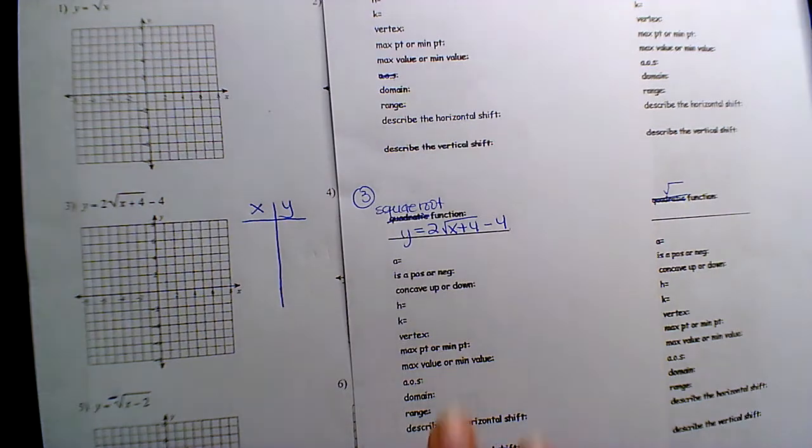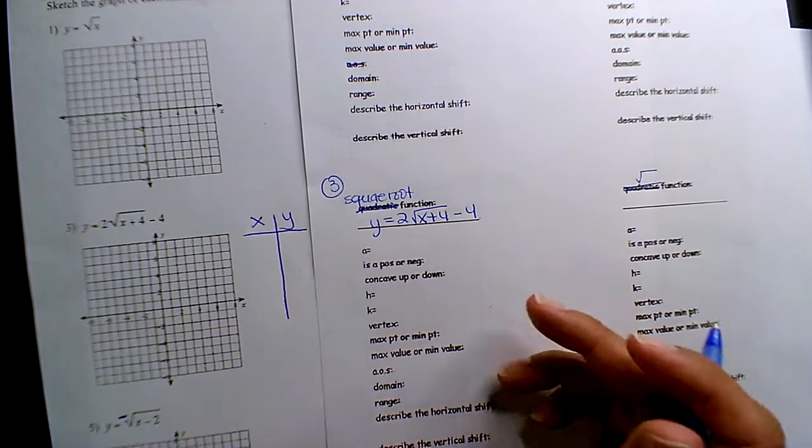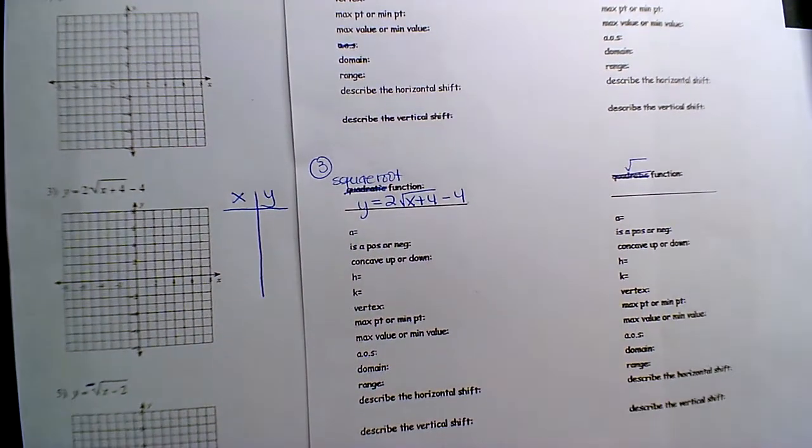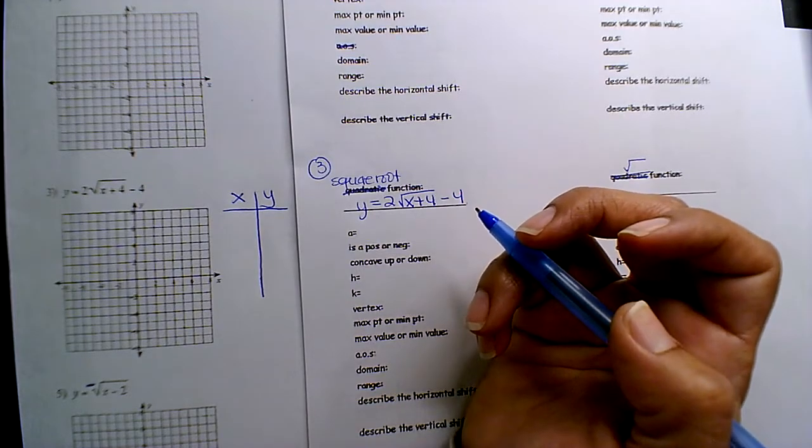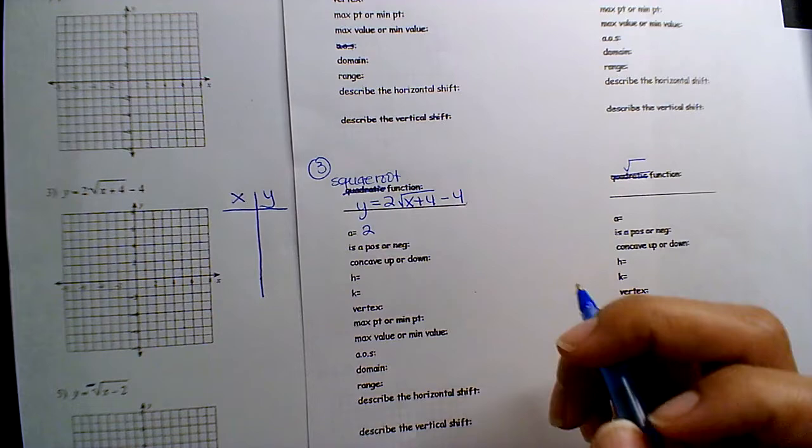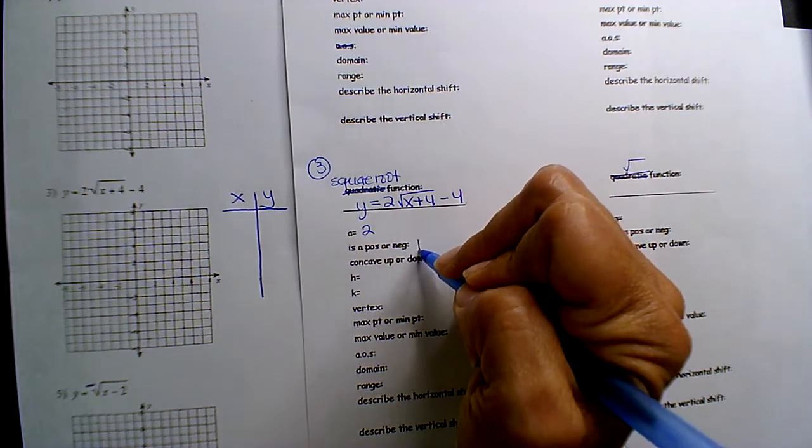All right, here we go. So, number three here, what's your A value? What's the A? Two. Positive two, right?